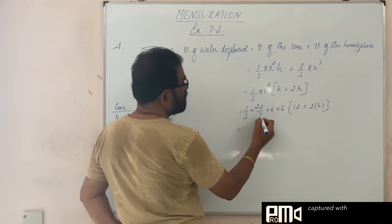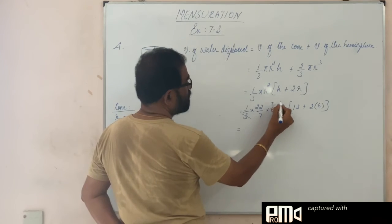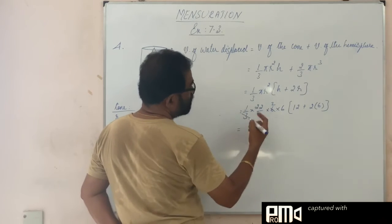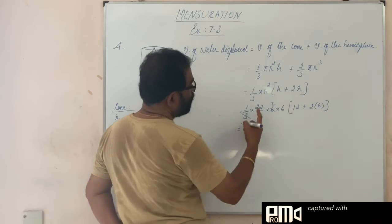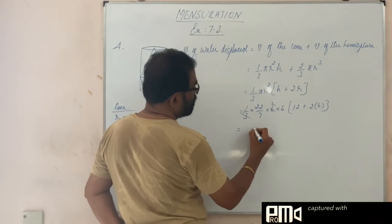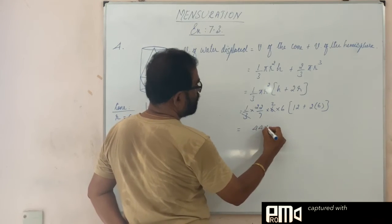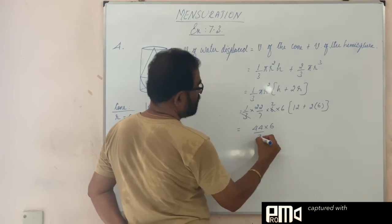Now this 3 and 6 you can cancel. This 3 and 6 you can cancel here 2 times. So 22 × 2. So 44 × 6. So I write it like that. 44 × 6 / 7.